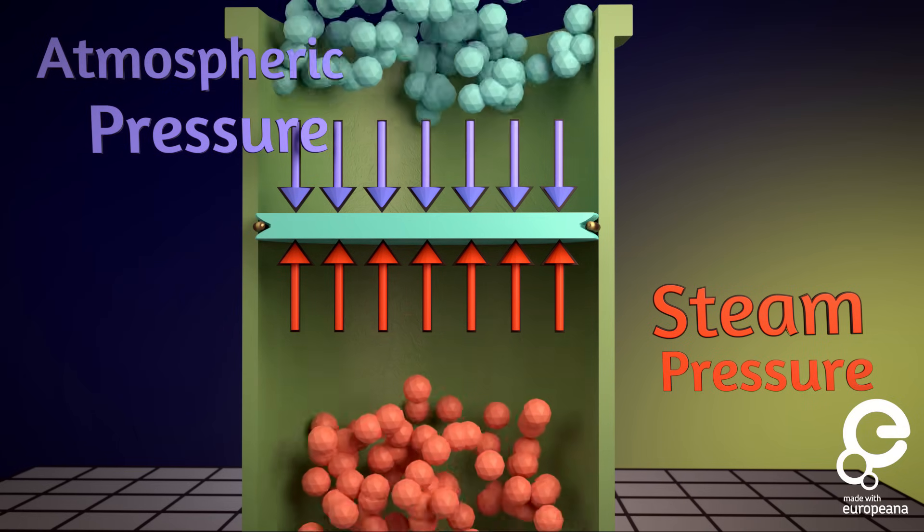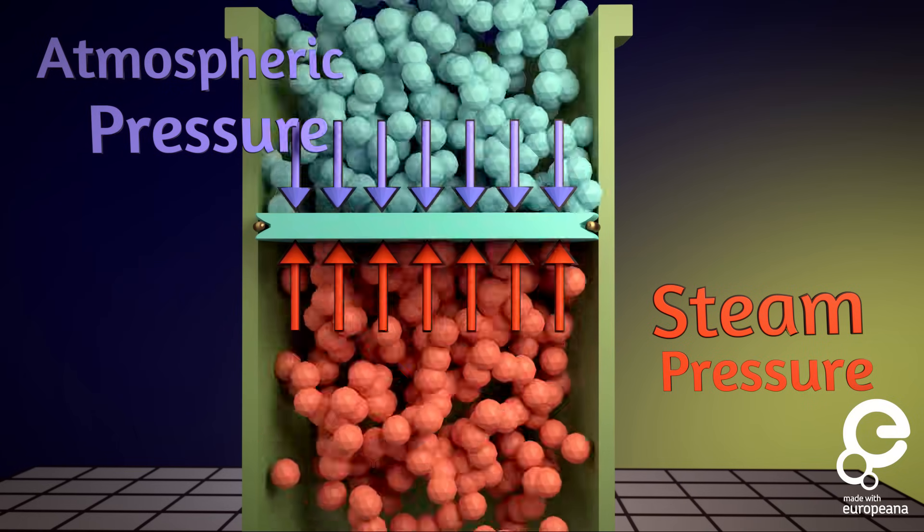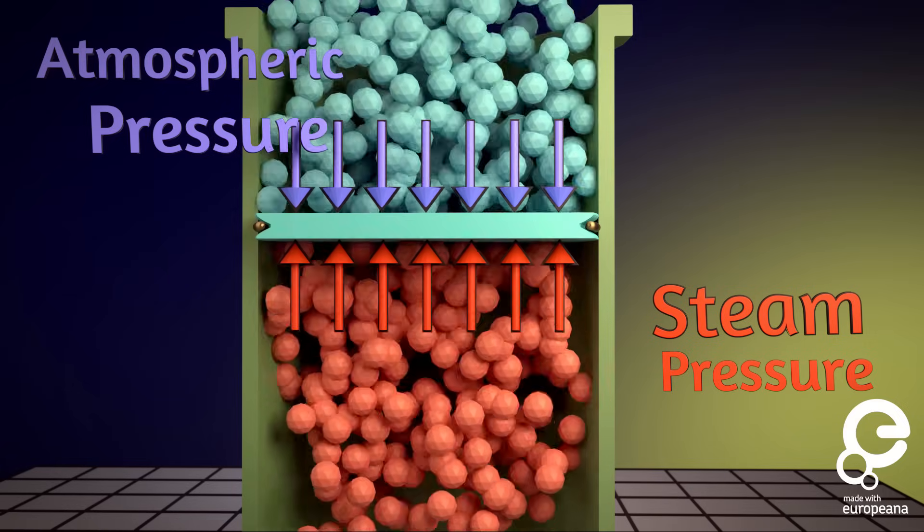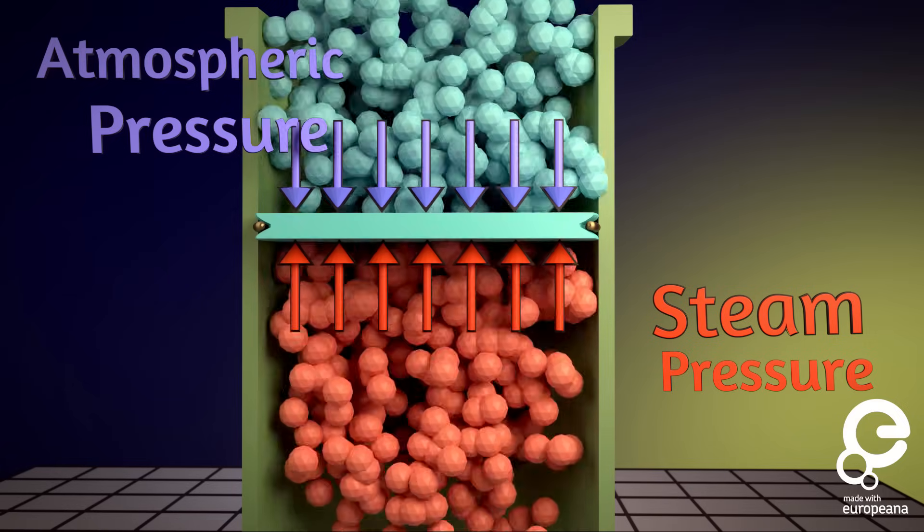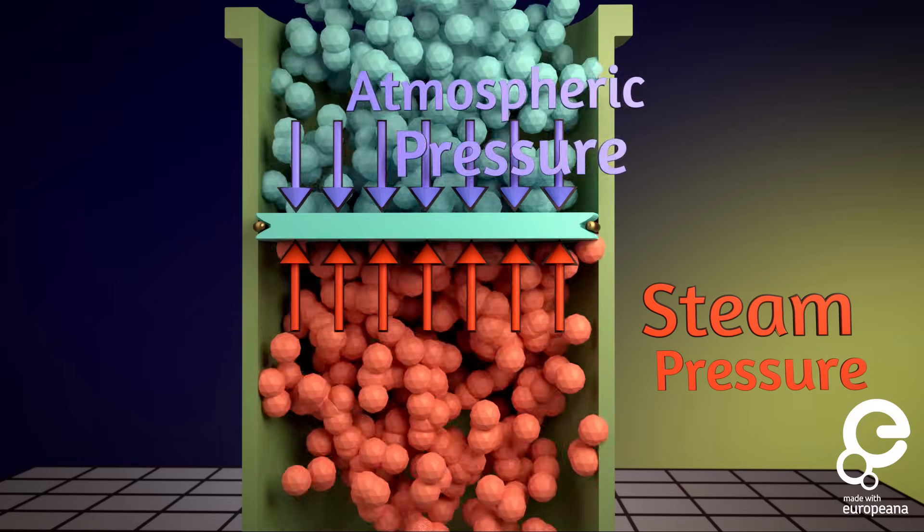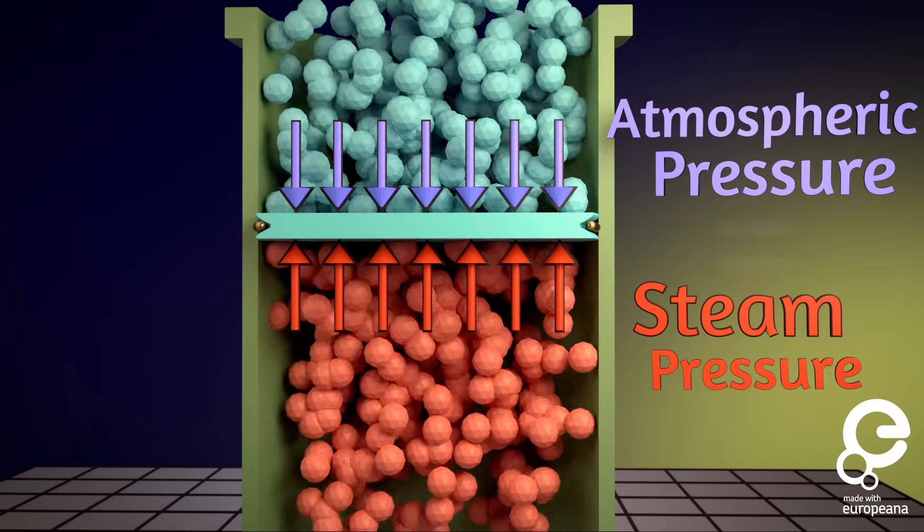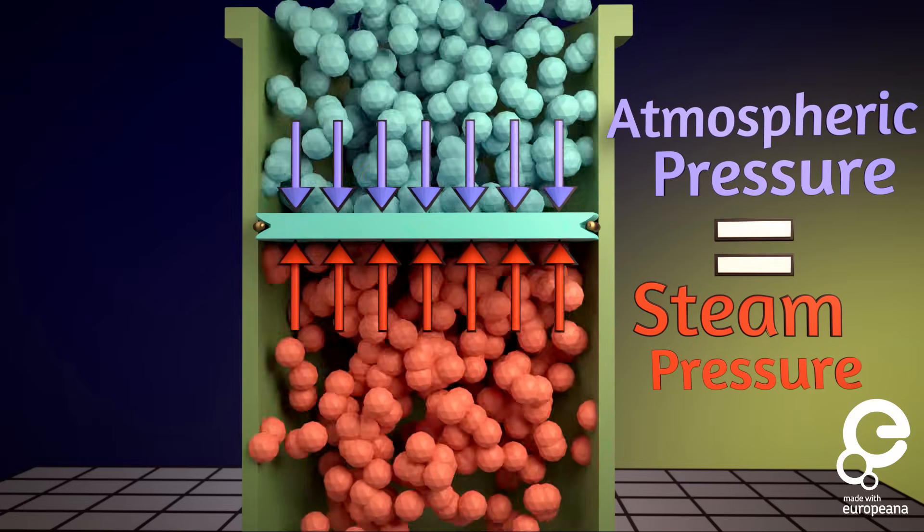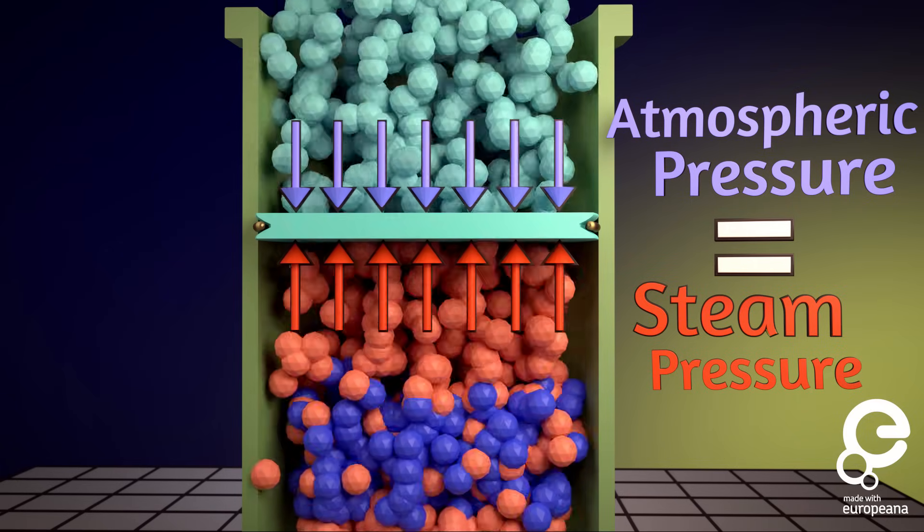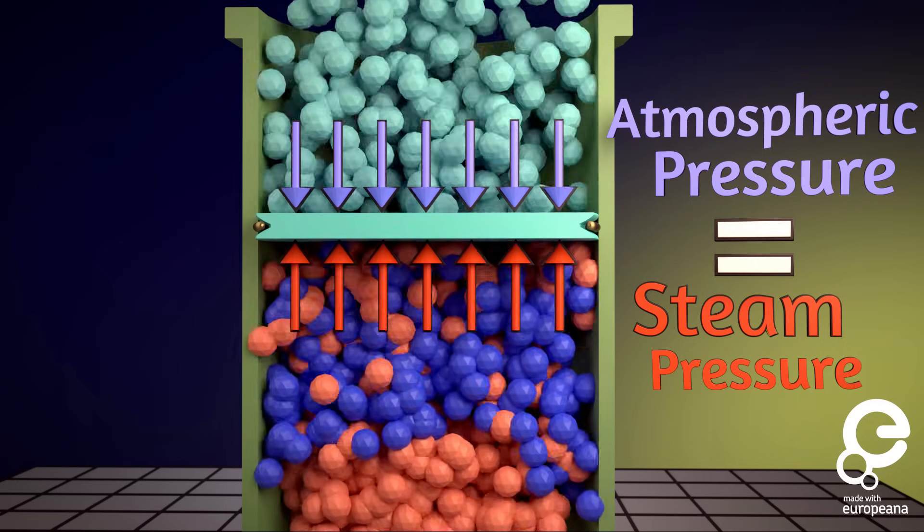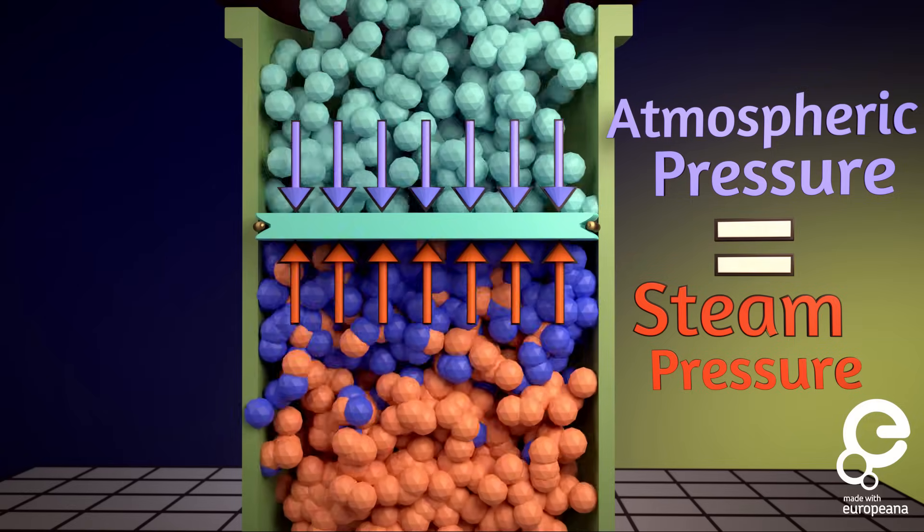So in this step of the cycle, we have the piston at the top with the cylinder full of steam, right before the valve with the cool water spray is opened. The two pressures from the bouncing of the atmosphere's molecules and the bouncing of the steam's molecules equal each other. Now, when water is introduced to the steam, the water cools down the steam, and with that it slows down the speed of the steam molecules.